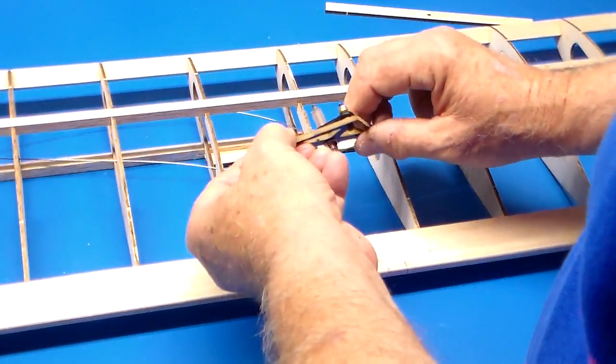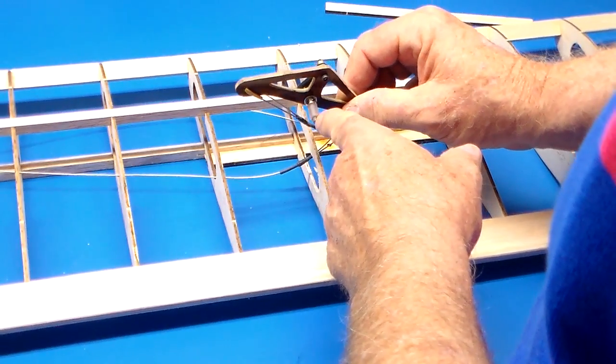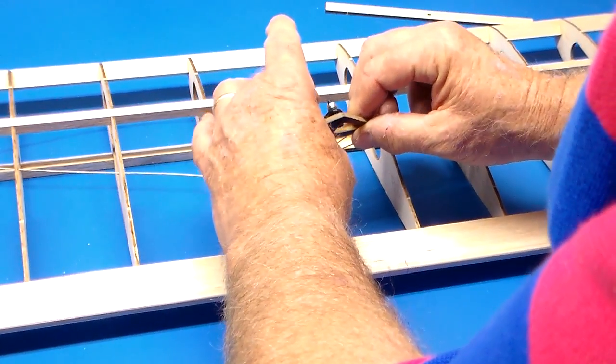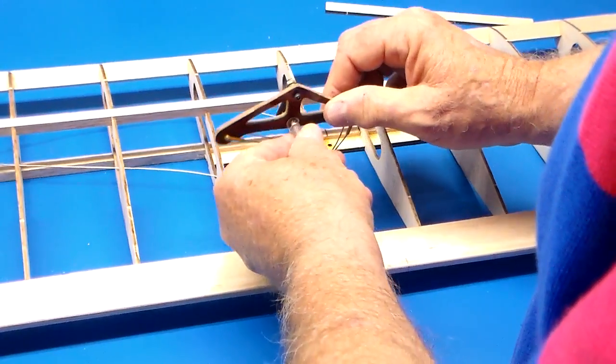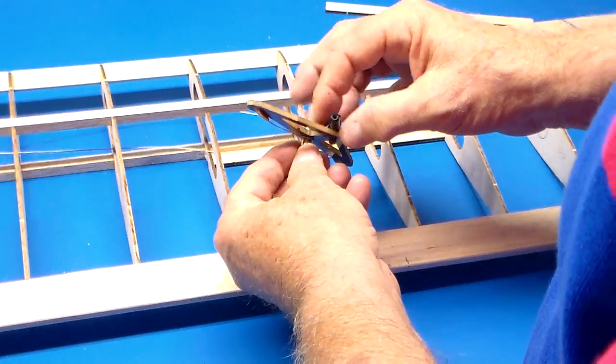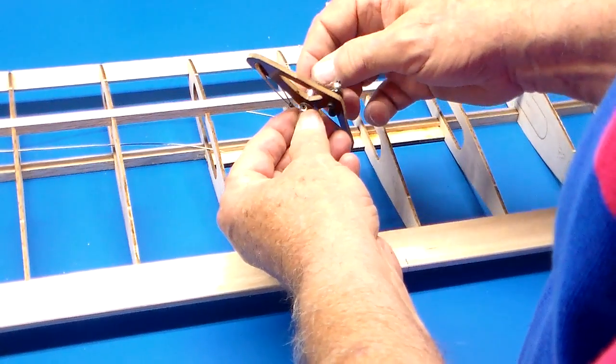The components of this is that you take a piece of eighth inch music wire, which you see here, and you run it through the center of your bell crank. What holds this and keeps it from falling or going up or down is on each side of the bell crank...